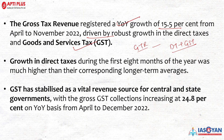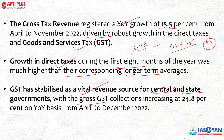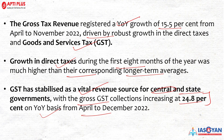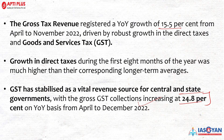GST has stabilized as a vital revenue resource for both the central and state governments, with gross GST collection increasing by 24.8% on a year-to-year basis from April to December 2022. This number — 24.8% — is very important. In mains examination answers, citing this figure makes your response more factual and evidence-based, demonstrating a strong understanding of GST collections.